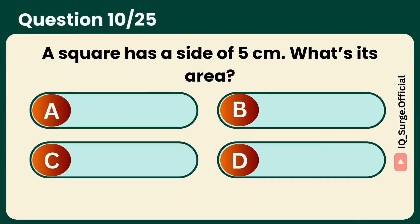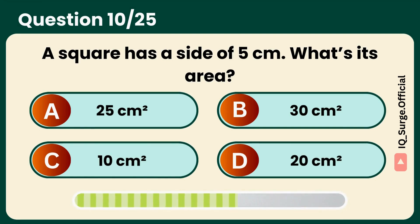A square has a side of 5 centimeters. What's its area? Answer: 25 square centimeters. Geometry fans, this one's for you.